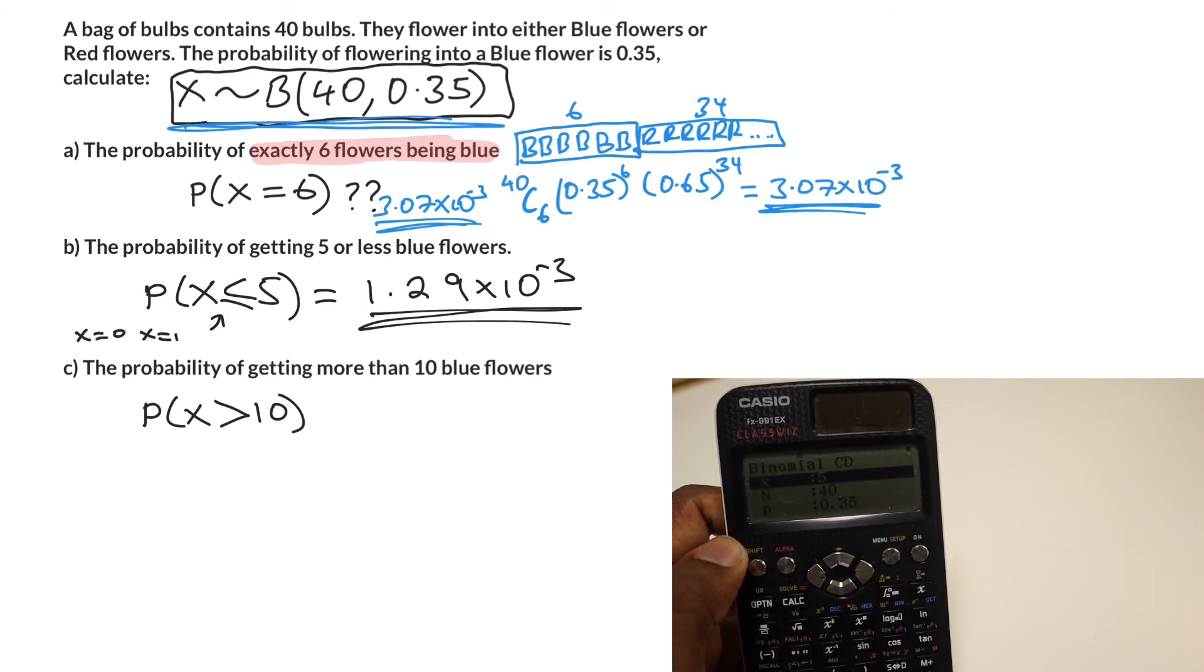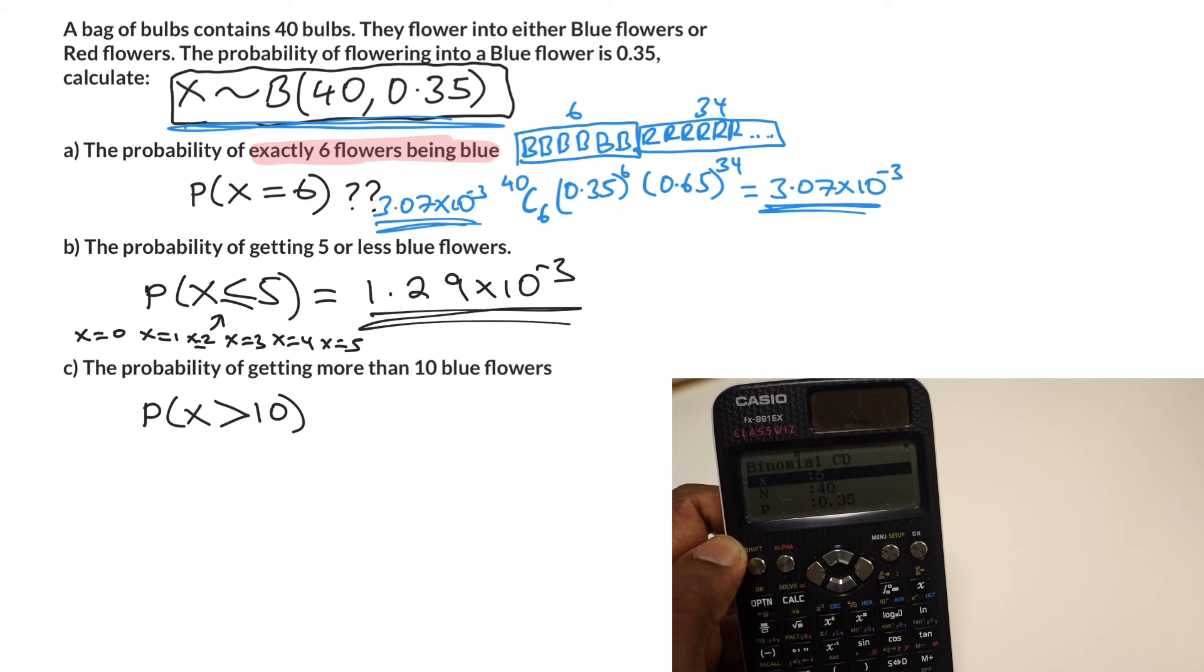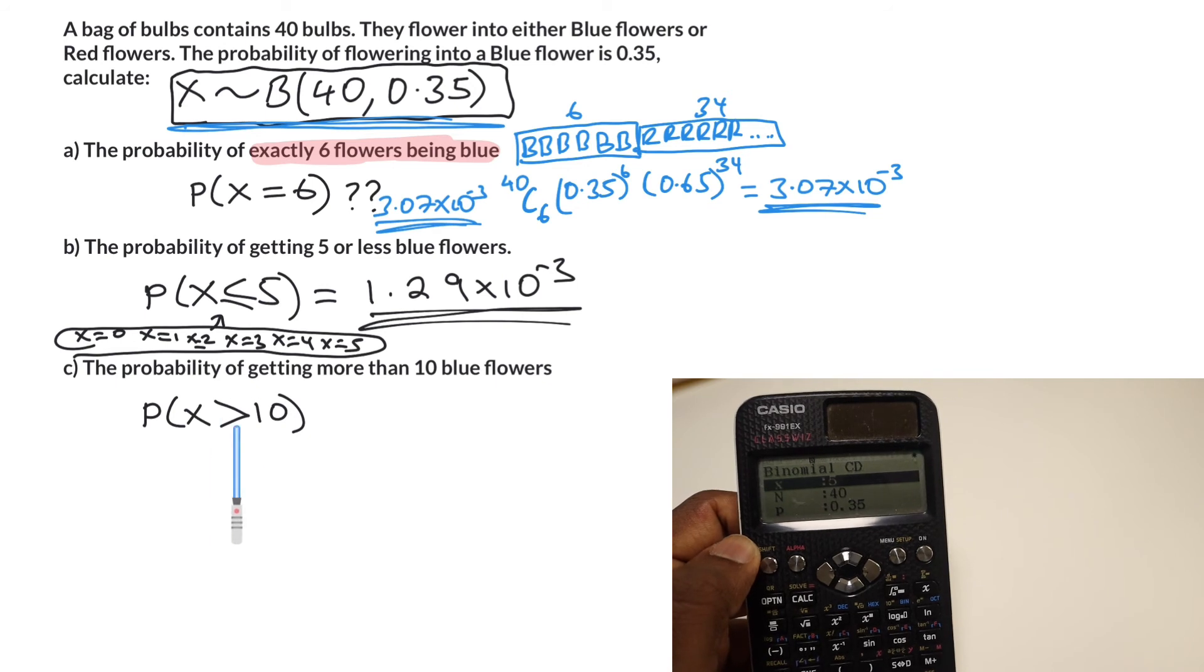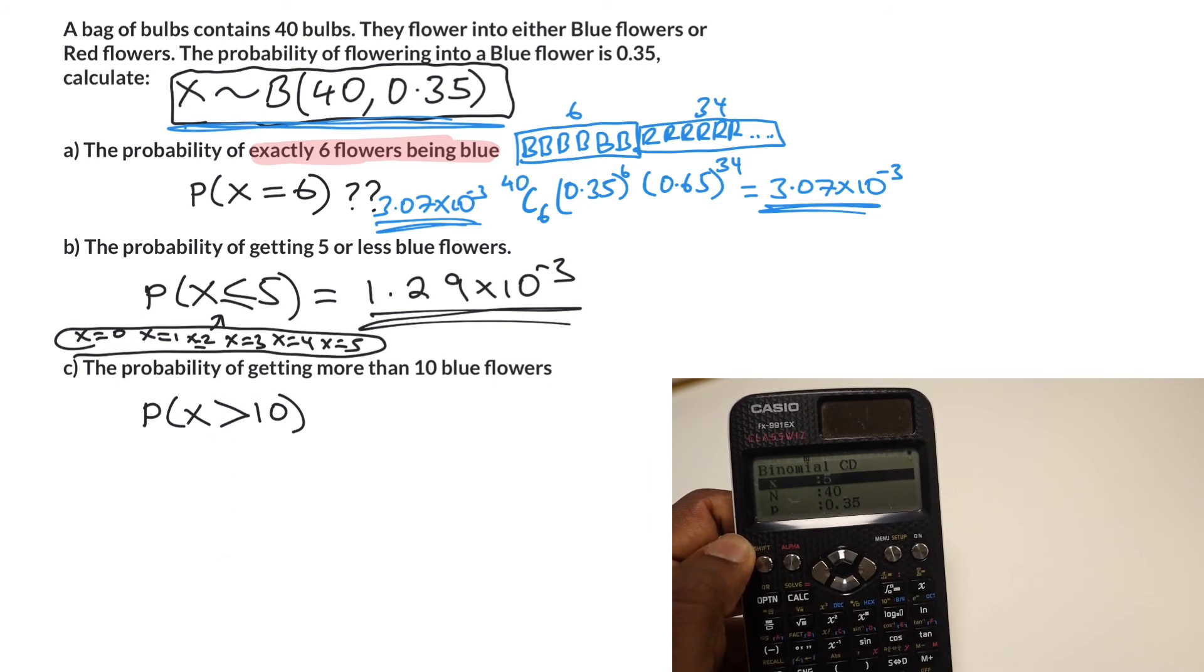For this here, what the calculator has done is added together x is 0, x is 1, x is 2, x is 3, x is 4, and x is 5. It's worked out all of those probabilities and added them together for us. So what we need to realize is to work out this probability here, we need to be a little bit clever.